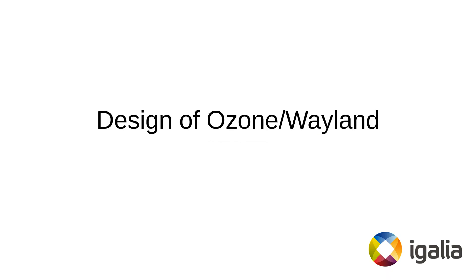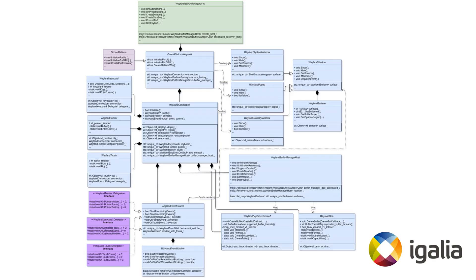Now let's talk about the design of Ozone Wayland in more detail. This is what the Wayland platform looks like inside — here you can see all the pieces and how they are connected. The main entry point to Ozone is OzonePlatformWayland, which implements OzonePlatform. It is responsible for creating all the core classes: Wayland windows, WaylandConnection, classes related to input methods, and others. The core object is the WaylandConnection, which encapsulates the connection to the Wayland server. It also hosts all key objects: input, keyboard, mouse, touch, UI event source, and other essentials.